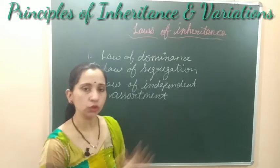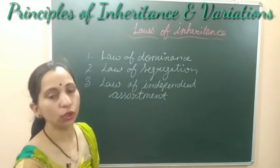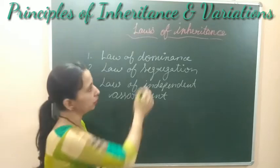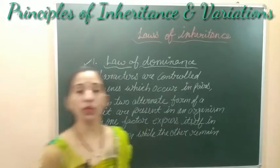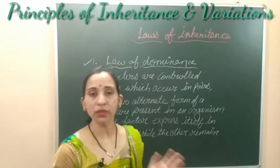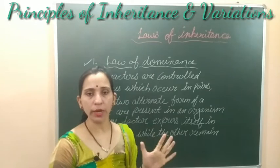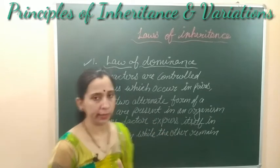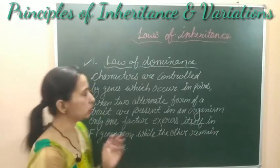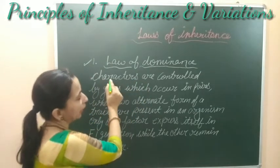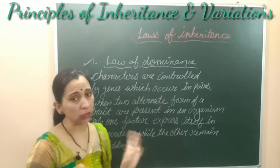Now we will discuss all three laws one by one. Let's start with the first law, which is the law of dominance. According to the law of dominance, characters are controlled by genes which occur in pairs.